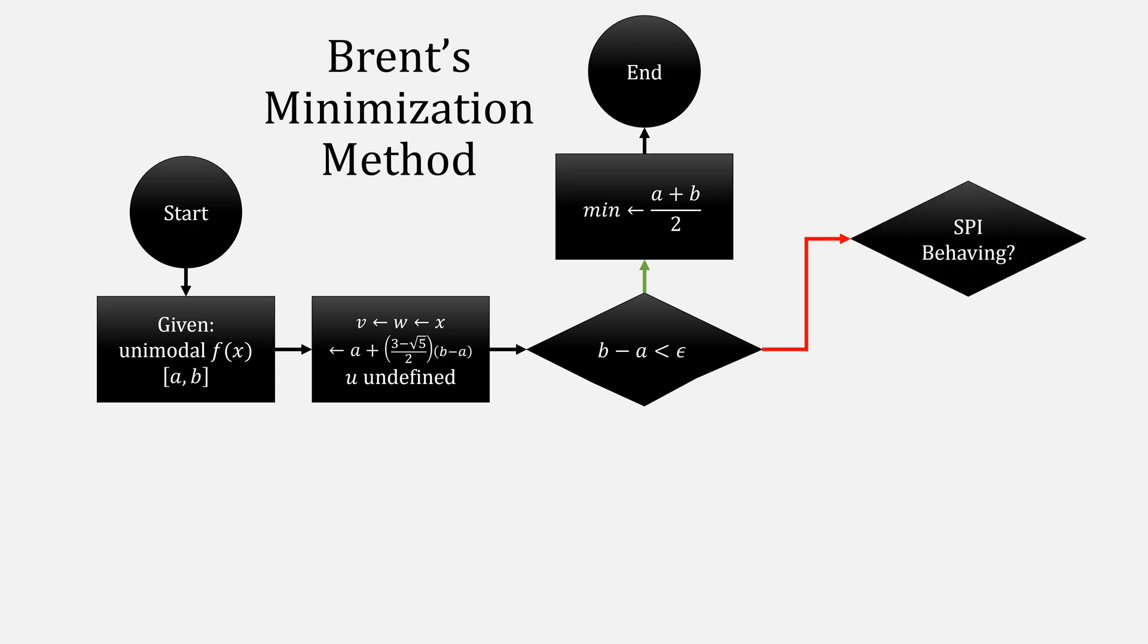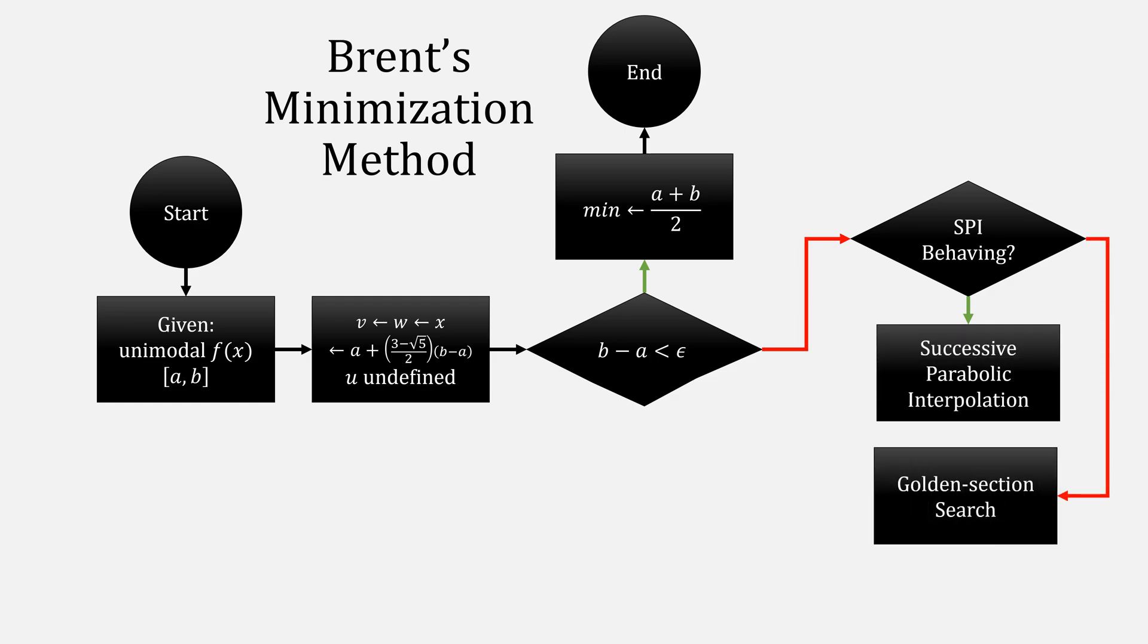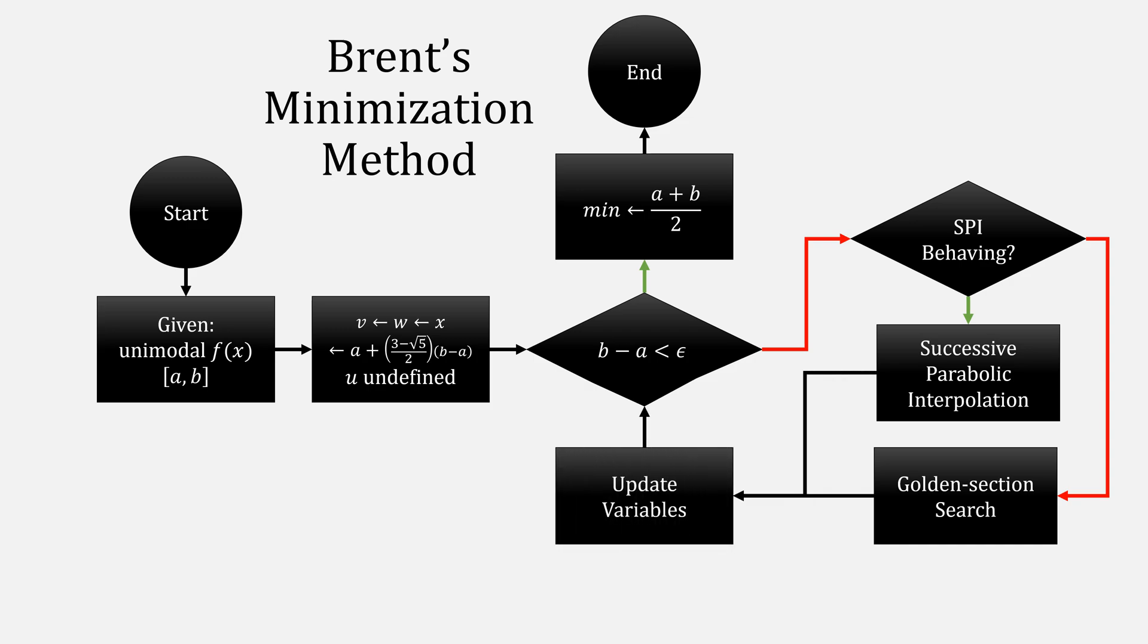Otherwise, we check to see if SPI would behave. When it is, we'll then apply successive parabolic interpolation. Otherwise, we use golden section search, and then regardless, update our variables. Finally, restart the process.